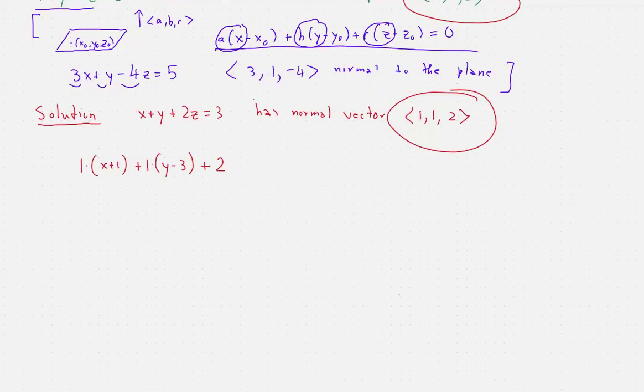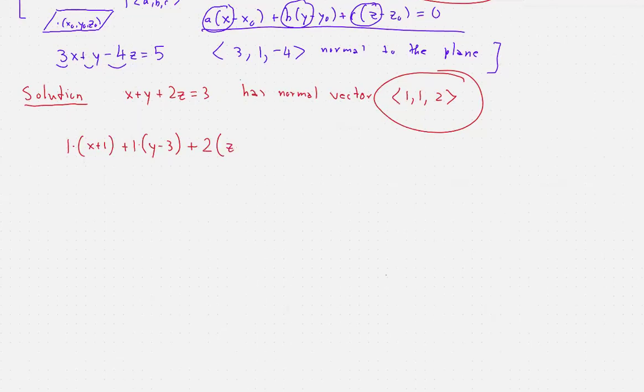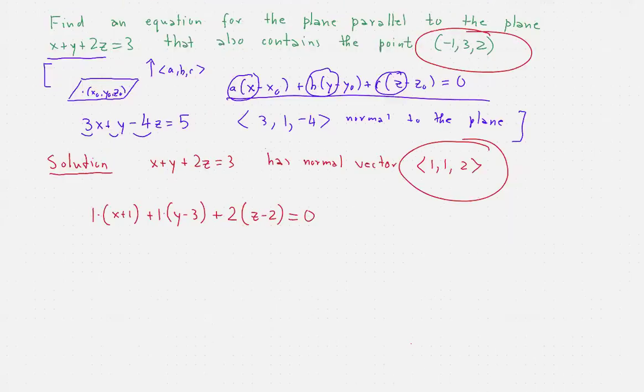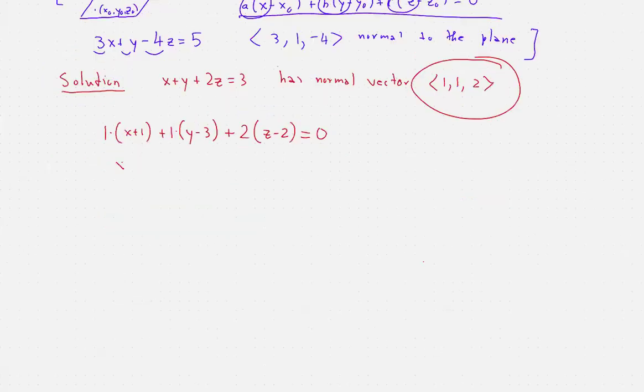And it's perfectly fine to actually leave the equation like this. If we want to work it out a little more, then we will have x plus y plus 2z. And what are the constants? So we have 1, minus 3 is negative 2, and minus 4 is negative 6. So minus 6 is equal to 0.